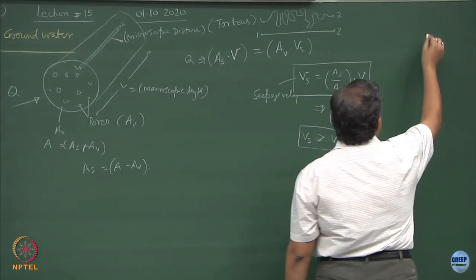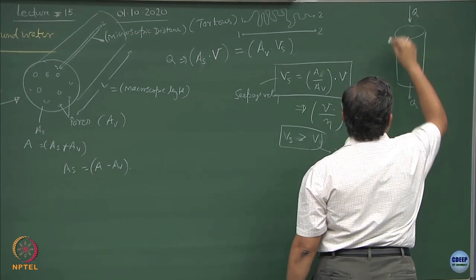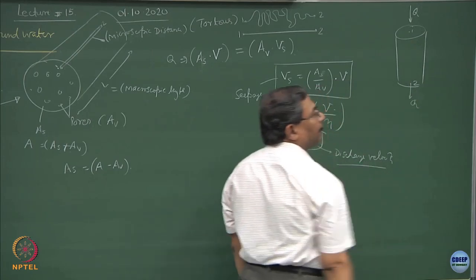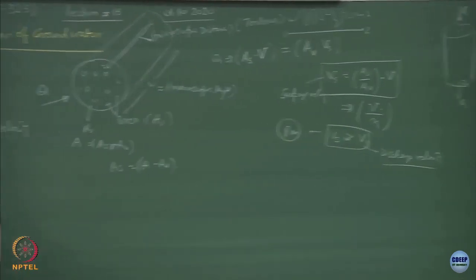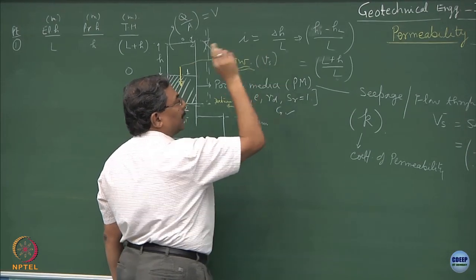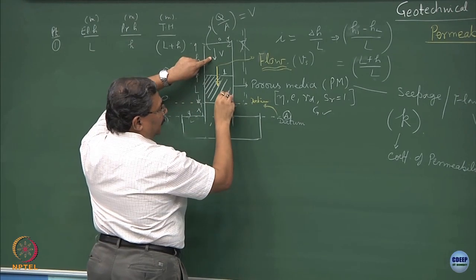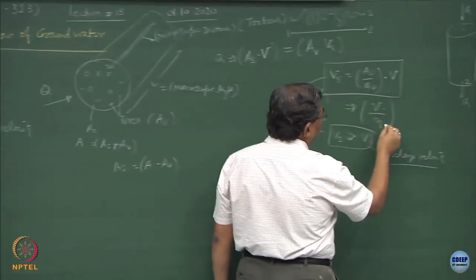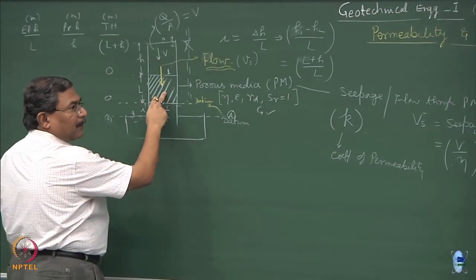To maintain continuity, the discharge Q entering and leaving the cylindrical sample is the same — no loss of fluid. The seepage and discharge are equal by continuity. When flow is initiated by the hydraulic gradient, there is a velocity component Vs. If capital V is known and porosity is known, Vs is determined. By virtue of porosity, Vs is greater than capital V, the discharge velocity.